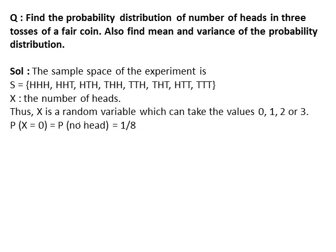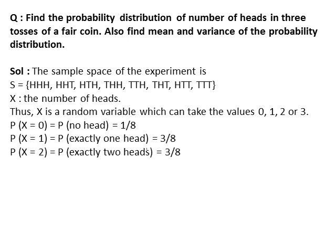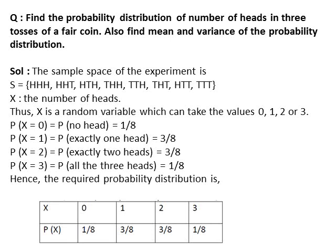P(x=0) = probability of no head = 1/8. P(x=1) = probability of exactly 1 head = 3/8. P(x=2) = probability of exactly 2 heads = 3/8. P(x=3) = probability of all 3 heads = 1/8. Now write the probability distribution as shown.